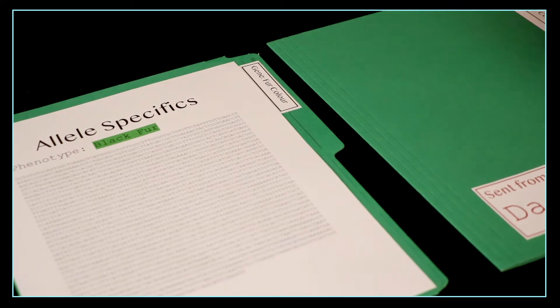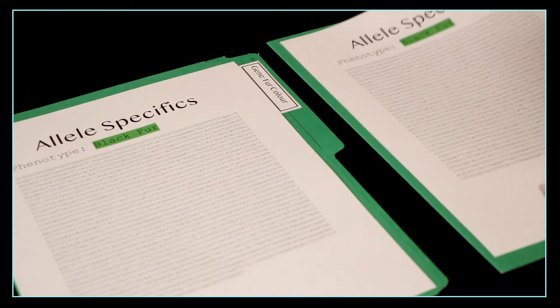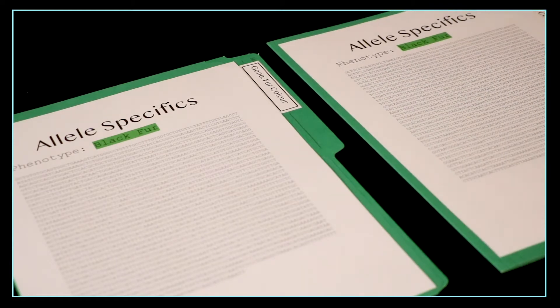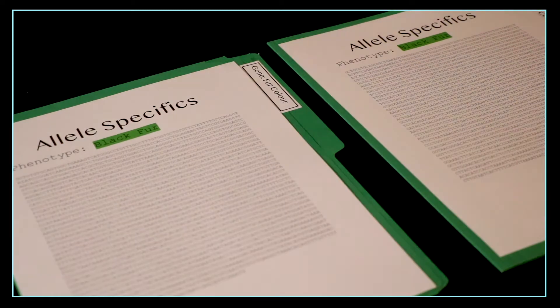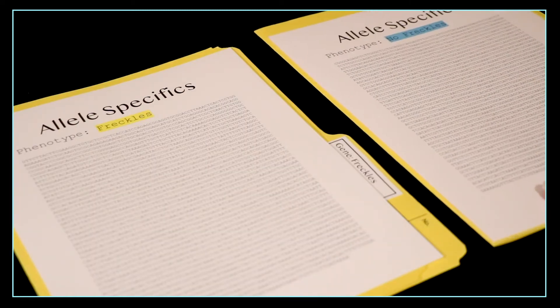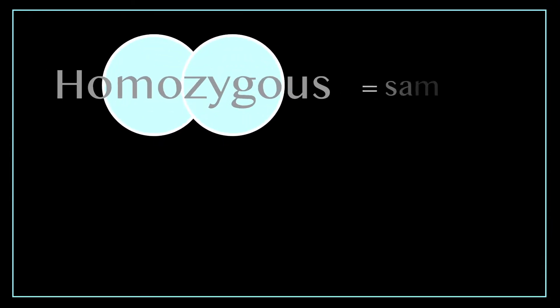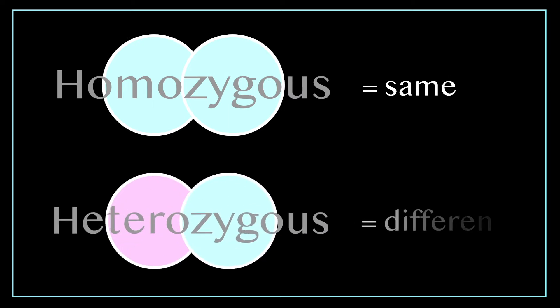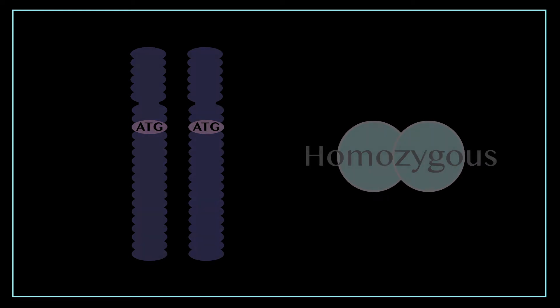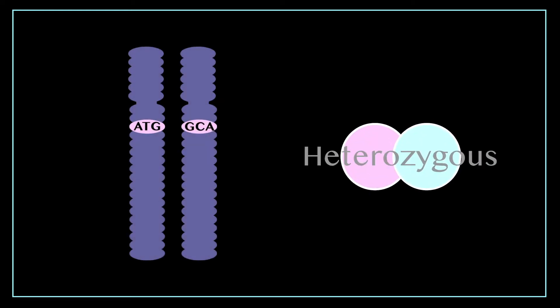Homozygous and heterozygous simply compare these alleles. If an individual has two of the same alleles it's homozygous whereas if the alleles are different it is heterozygous. This is simple to remember if you think of the root of the word. Homo means same whereas hetero means different. In terms of genes this would be an example of a homozygous individual while this is a heterozygous individual.